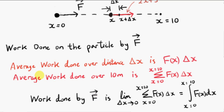By the way, the word average in this line here is used a bit loosely because it depends on the size of the increment delta x. But anyway, if we want to get the work done on the particle by force f for the straight line journey from x equals 0 to x equals 10, we have to take the limit as delta x approaches 0 of this sum.